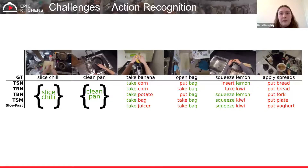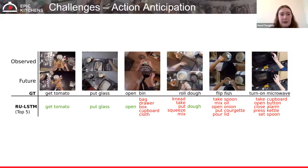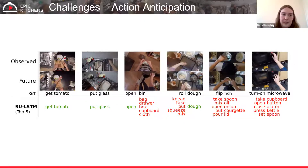EPIC Kitchens has five challenges. The first is action recognition: given a trimmed clip with start and end times, predict the verb or noun associated with that action. The second is action anticipation: observe part of a video and predict what action happens next — which is challenging even for humans in some cases.